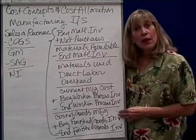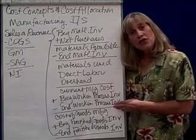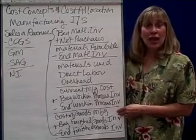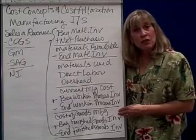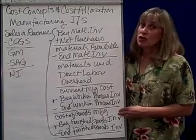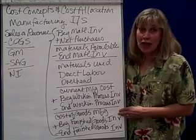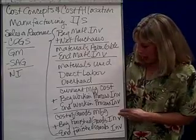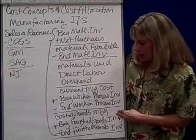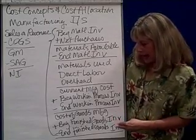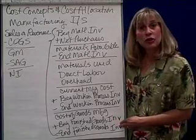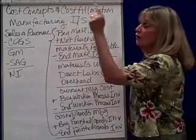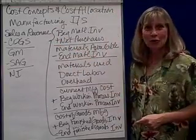What did you produce this period? Add to that beginning finished goods inventory — what did you produce last period that is ready for sale? Then subtract ending finished goods inventory to get cost of goods sold.